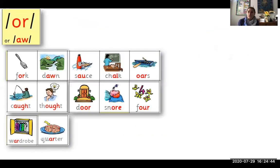Now, let's take this one, for example. The sound 'o'. The sound 'o' can be written in these 12 ways. O as in fork, o as in dawn, o as in sauce, o as in chalk, o as in oars, o as in court.